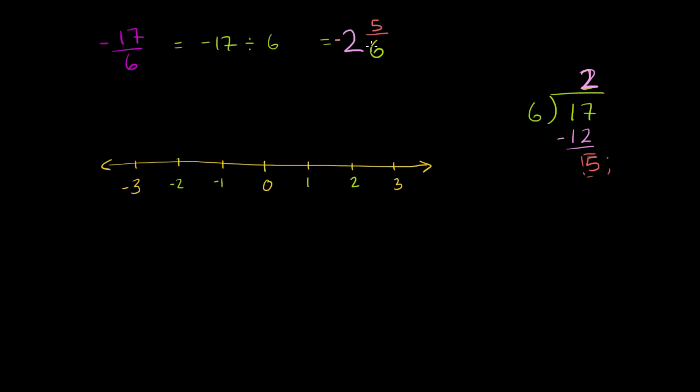So we're going to go negative 2 and 5/6. So this is negative 1. Then we keep going. We go to negative 2. Now we have to go another negative 5/6. So that's almost another negative 1. It's another negative 5/6.